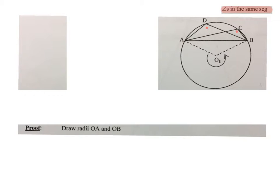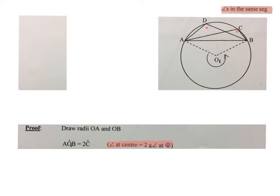The first thing you'll write is proof. You say draw radii OA and OB. So you connect, put the O in the center, you connect OA and OB. Then you write angle AOB is equal to two times C. So that angle at the bottom there is twice as big as that angle at C. The reason: angle at center is two times angle at circle.